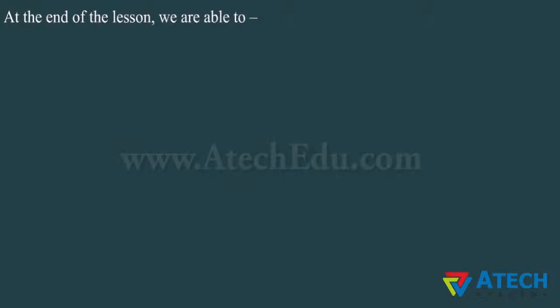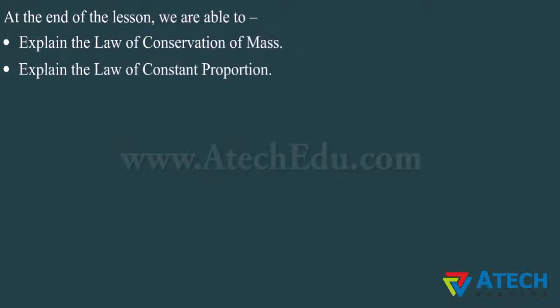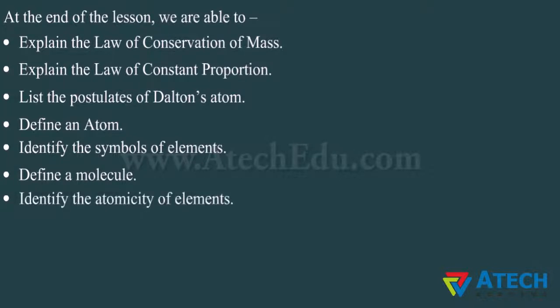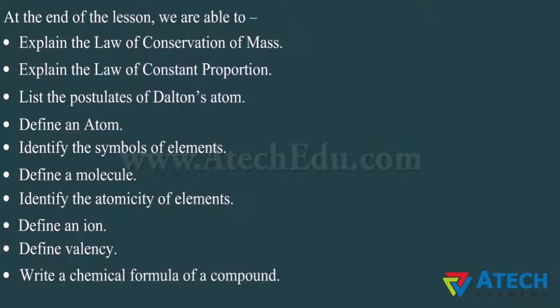At the end of the lesson, we are now able to: explain the law of conservation of mass, explain the law of constant proportion, list the postulates of Dalton's atomic theory, define an atom, identify the symbols of elements, define a molecule, identify the atomicity of elements, define an ion, define valency, and write a chemical formula of a compound.